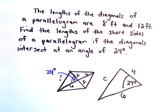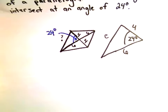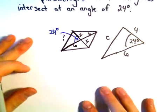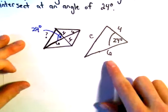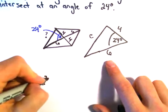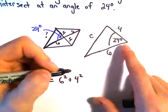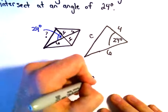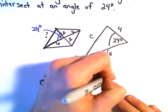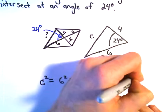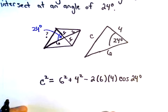So here we'll just use the law of cosines. We would get C squared equals 6 squared plus 4 squared minus 2 times 6 times 4 times cosine of 24 degrees.